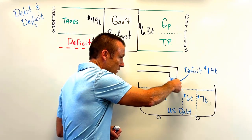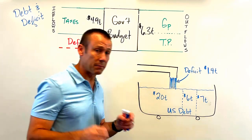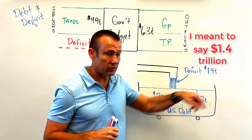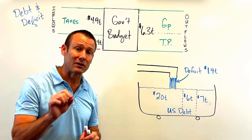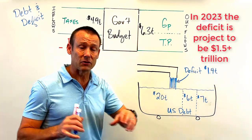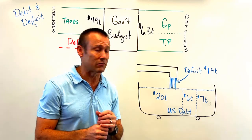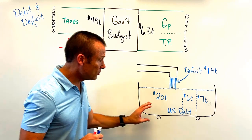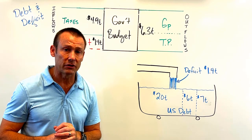Think of a bathtub: the water coming out of the faucet is the flow — that's the deficit. In 2022, our deficit was about $1.4–1.5 trillion. That deficit is actually going to be bigger in 2023. These are big deficits for an economy with a pretty low unemployment rate. Our total U.S. debt is about $33 trillion.